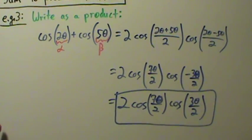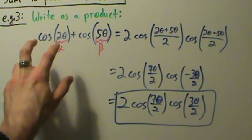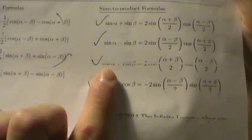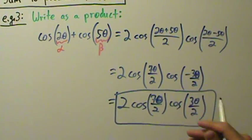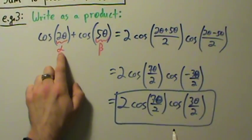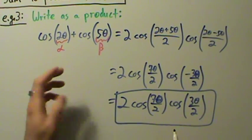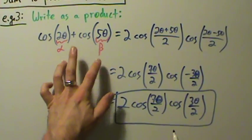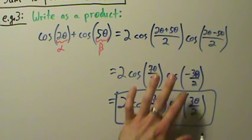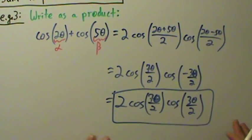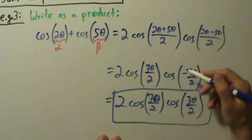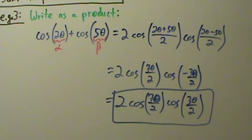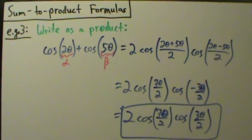All we did was identify what type of expression we have — cosine of something plus cosine of something else — which tells us to use the sum to product formula for cosine alpha plus cosine beta. We identified alpha as two theta and beta as five theta, plugged these values into the formula, and simplified. Don't forget to use the even property: cosine is an even function, so we simplify cosine of negative three theta over two to cosine of three theta over two. That's example three of sum to product formulas.